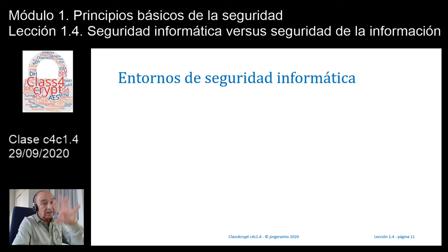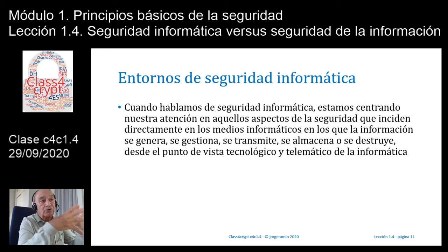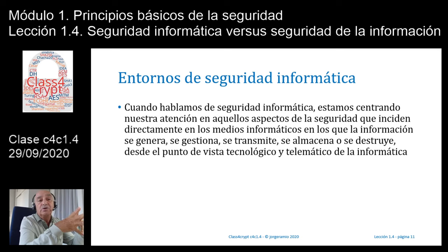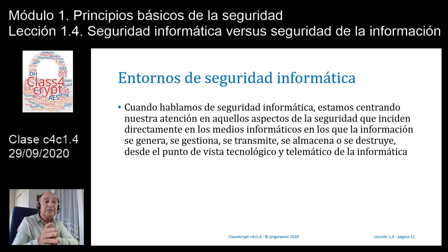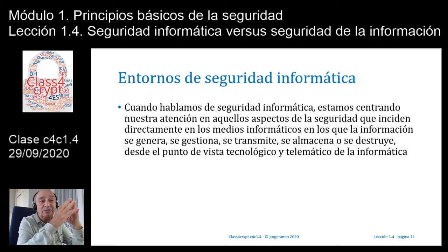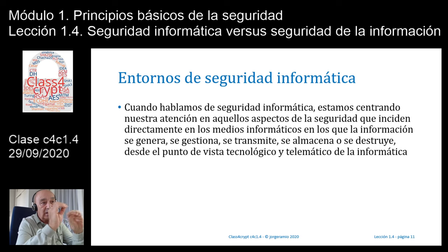Veamos cuáles son los entornos de la seguridad informática. Cuando hablamos de seguridad informática, estamos centrando nuestra atención en aquellos aspectos de seguridad que inciden directamente con los medios informáticos y la información que se genera, gestiona, transmite, almacena o destruye, siempre desde el punto de vista tecnológico y telemático. Este es el punto básico que va a diferenciar la seguridad informática de la seguridad de la información.